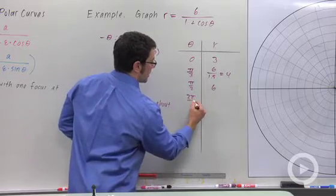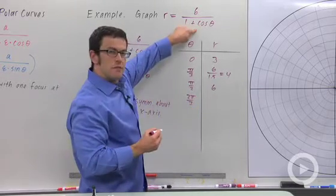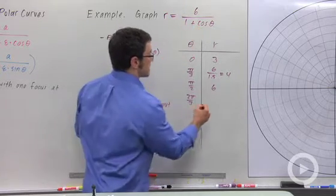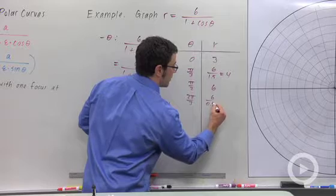And then 2 pi over 3. Cosine of 2 pi over 3 is negative 1 half. So it's 6 over 1 minus 1 half, 6 over 0.5, which is 12.